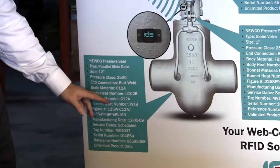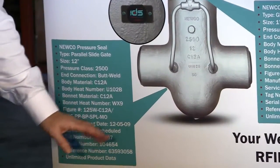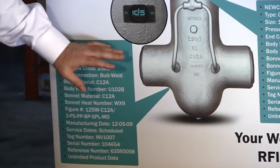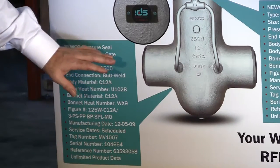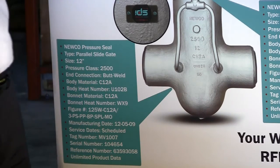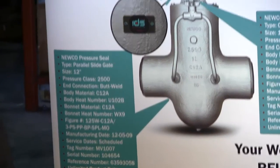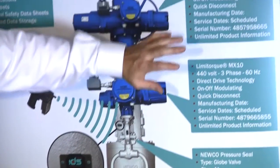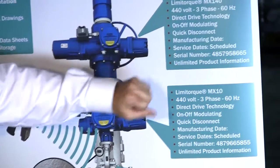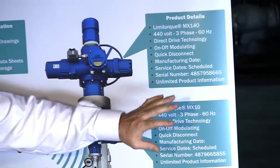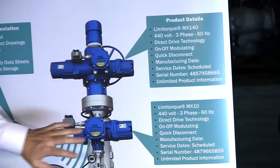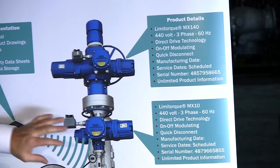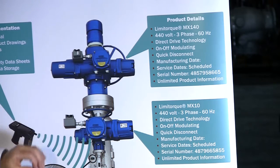You've also got all the heat numbers — the body, the bonnet, the stem, the wedge — whatever heat numbers are associated with that particular component. If you come over to the actuator side of the equation, you've got all the information about the actuators: the voltage, how many phase, the different type of drive technology.